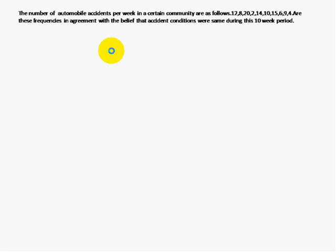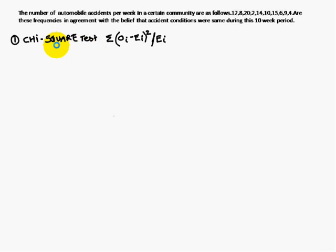For this we will use the chi-square test. The chi-square test formula is Σ(oi - ei)²/ei. oi stands for the observed frequency, ei stands for the expected frequency.